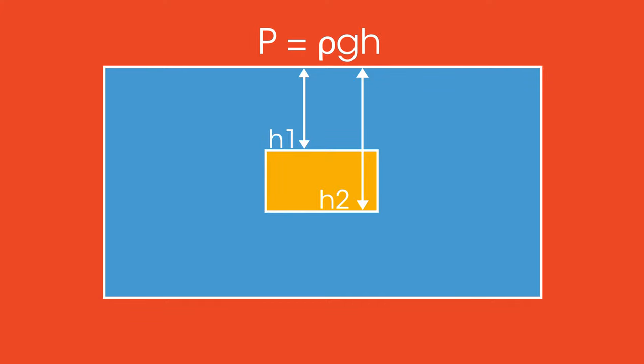Because p equals rho gh, the pressure on the bottom surface due to the liquid must be greater than the pressure on the top surface. This results in there being more force on the bottom surface of the box than there is on the top surface.